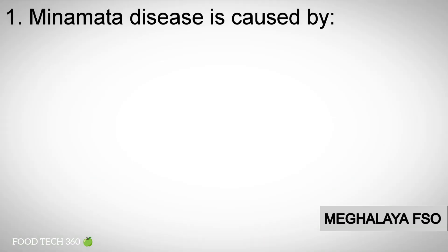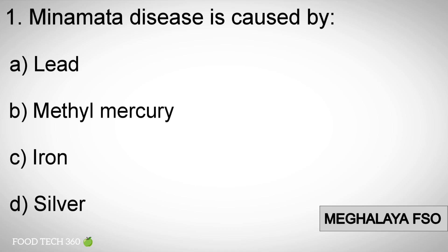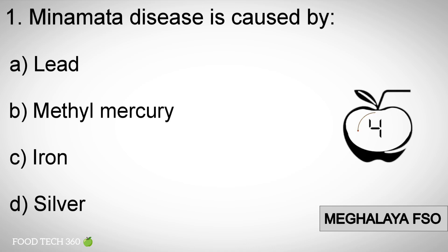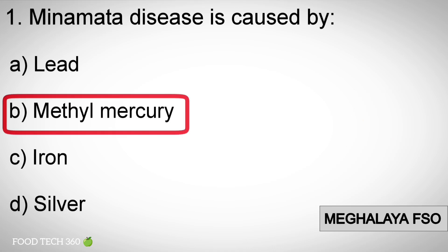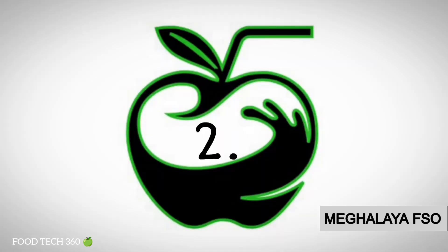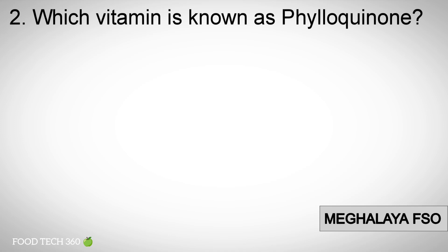Question number one: Benamata disease is caused by. Options: A) Lead, B) Methyl mercury, C) Iron, D) Silver. Correct answer: B) Methyl mercury.